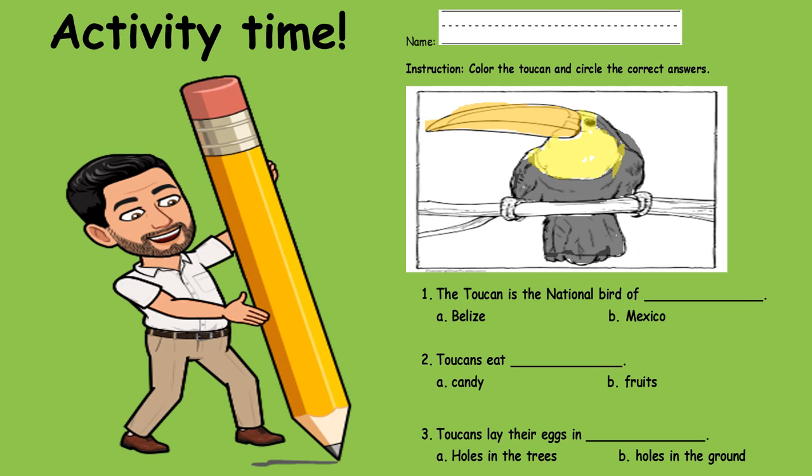So color the beak yellow boys and girls. And if you are very creative you can add the little random colors that we saw. So those are the little colors that I saw on the toucan.